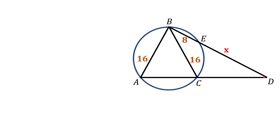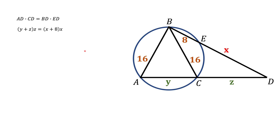When I look at this problem, the first thing I saw is that there are some distances, so probably we need some relationship between these distances. I found angle ADB here — both rays of this angle intersect the circle. There is something called the secant-secant theorem that tells us about the lengths of these rays. The theorem says that if you take distance BD and multiply it by distance ED, that should equal distance AD multiplied by distance CD. So if we call AC as Y and CD as Z, we can plug all these variables and numbers to get an expression.